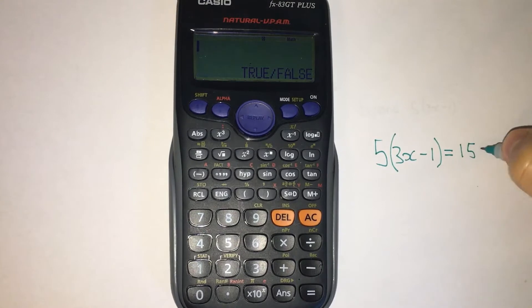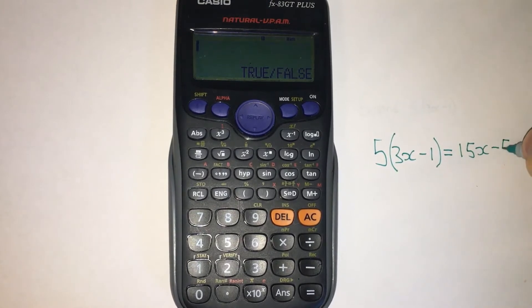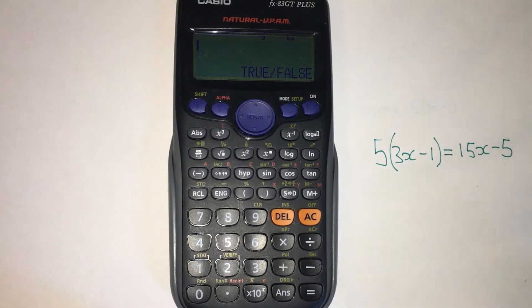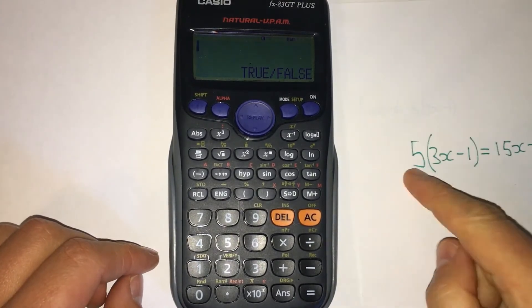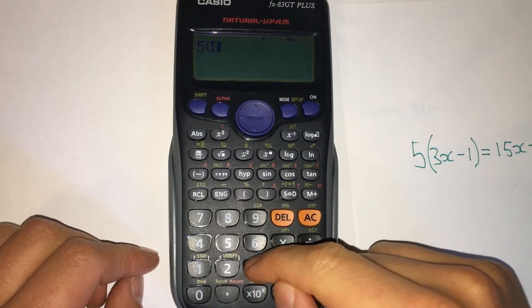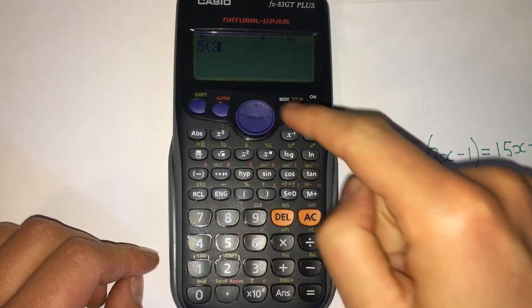We want to check whether we are correct, so we type in the left hand side first: five bracket three, and we're going to use the alpha button to give us the x minus one, close the brackets.